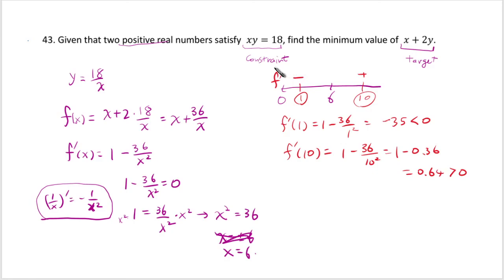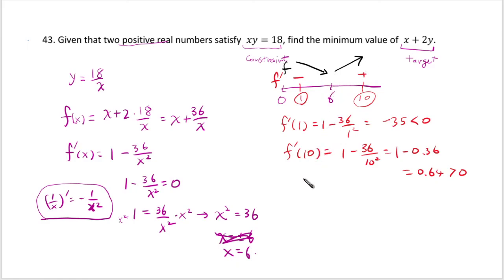That means the function f is going down before x = 6 and then going up after — decreasing and then increasing — which makes x = 6 an absolute minimum. Because overall it's decreasing and then increasing again, this is the lowest point on the graph.